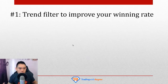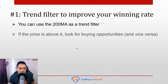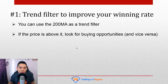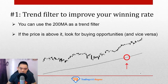So how do you actually use moving average to improve your winning rate? There's no rocket science — it's quite simple. You can use the 200-period moving average as a trend filter. The general rule is: if the price is above the 200-period moving average, you want to look for buying opportunities, because it's telling you that this market on this time frame is in an uptrend. Likewise, if the price is below the 200-period moving average, chances are it's in a downtrend and you want to look for selling opportunities.